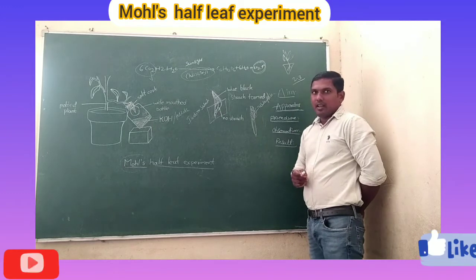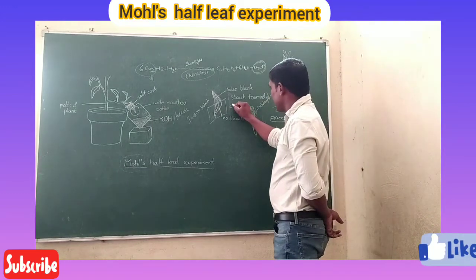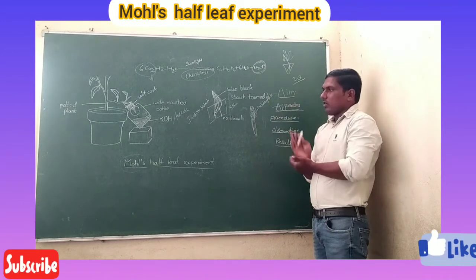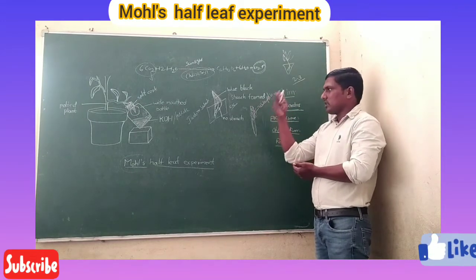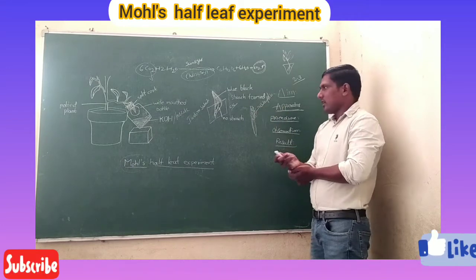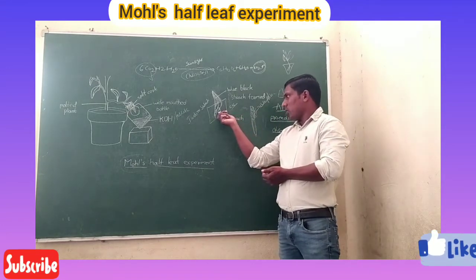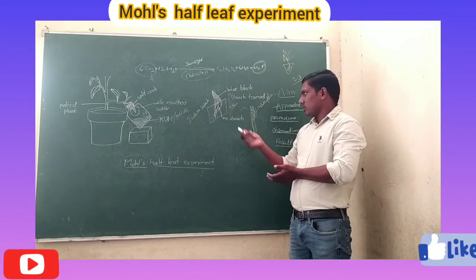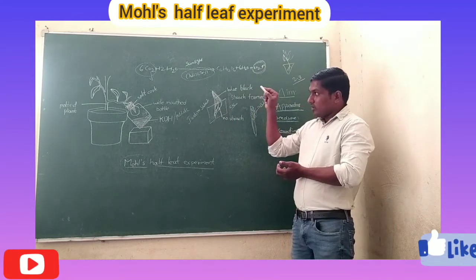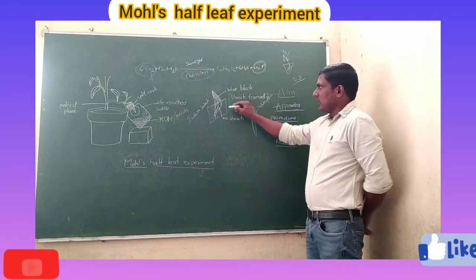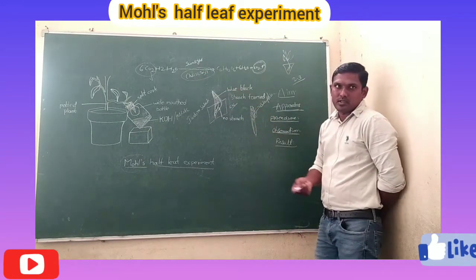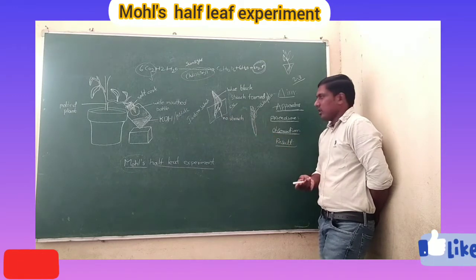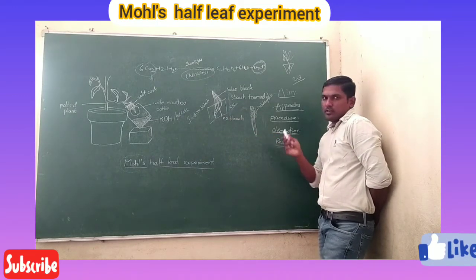The portion that got access to carbon dioxide and was exposed to sunlight changes to blue or black color. Based on this activity observation, the leaves exposed to sunlight change to blue or black, while those inside the bottle — which had no carbon dioxide — do not change color.